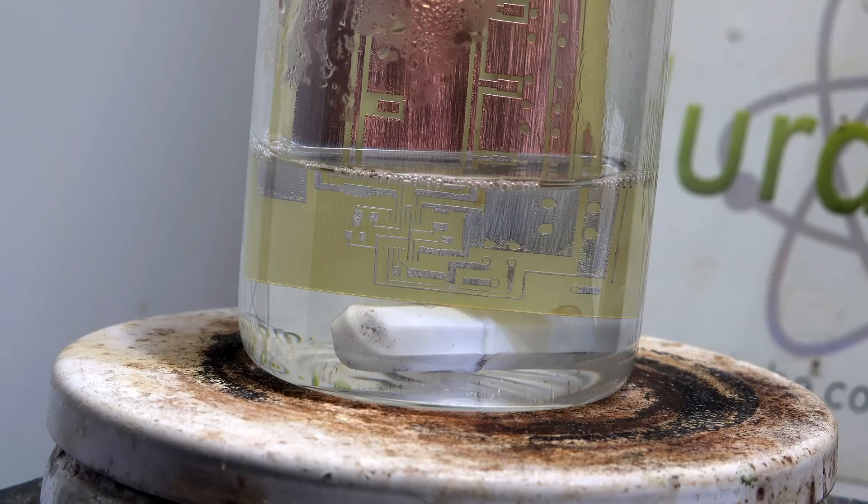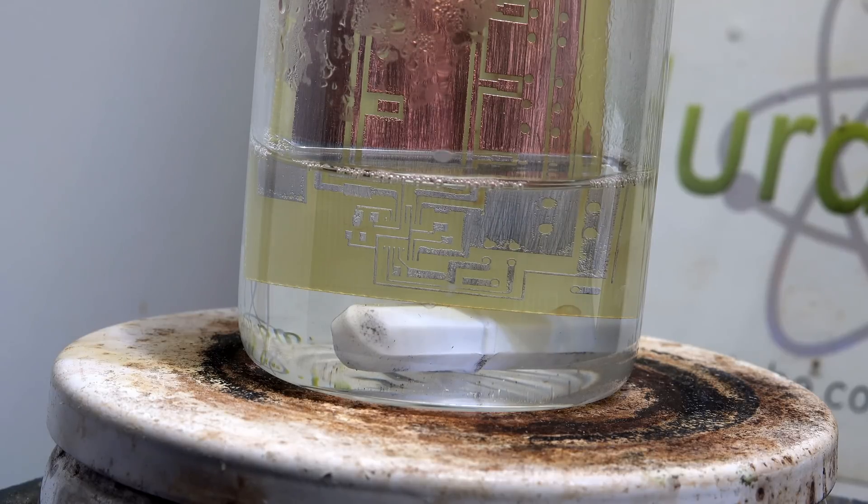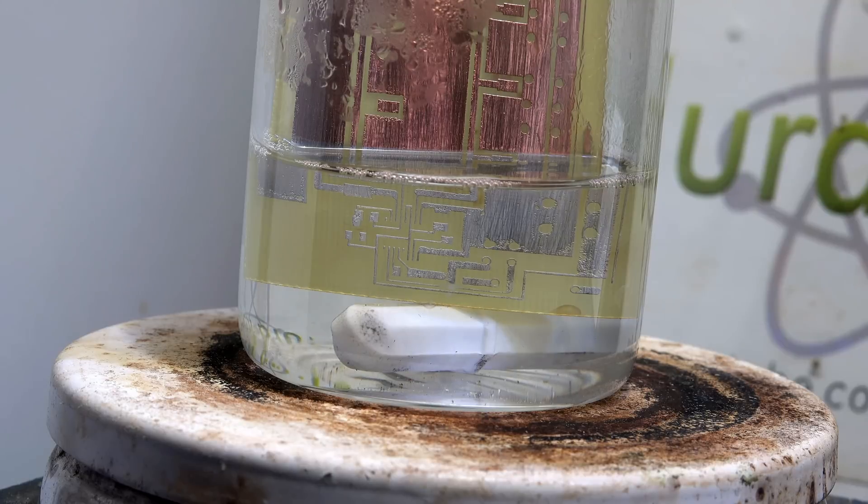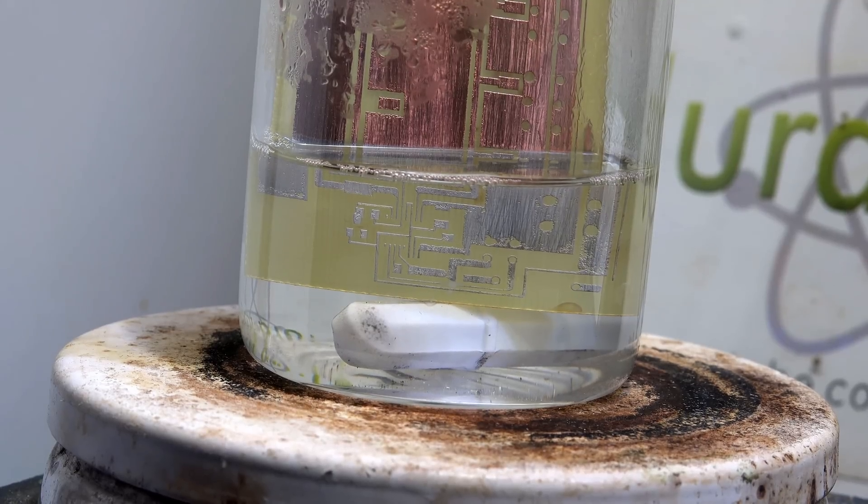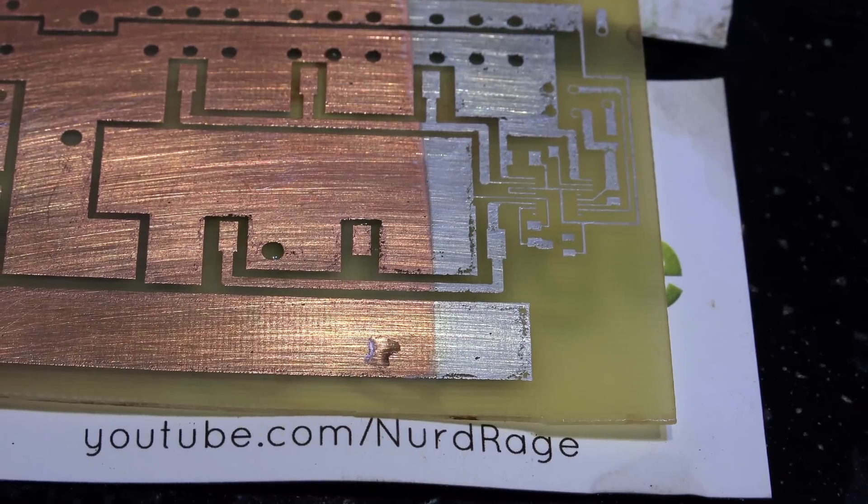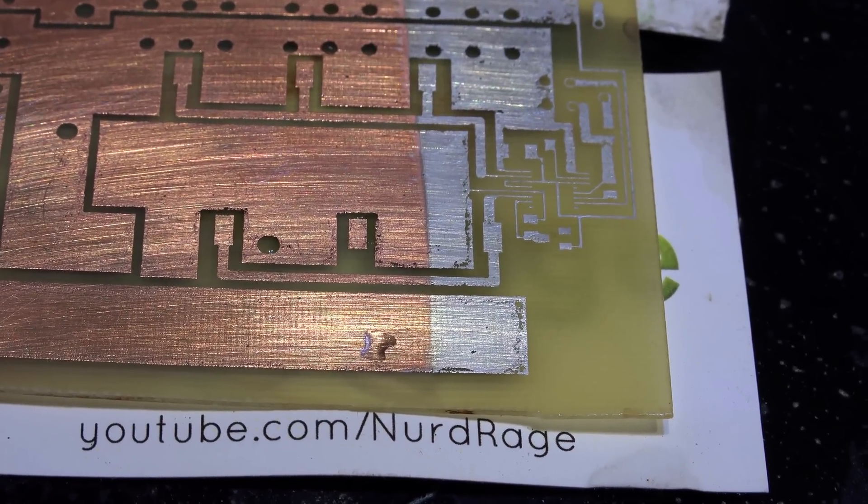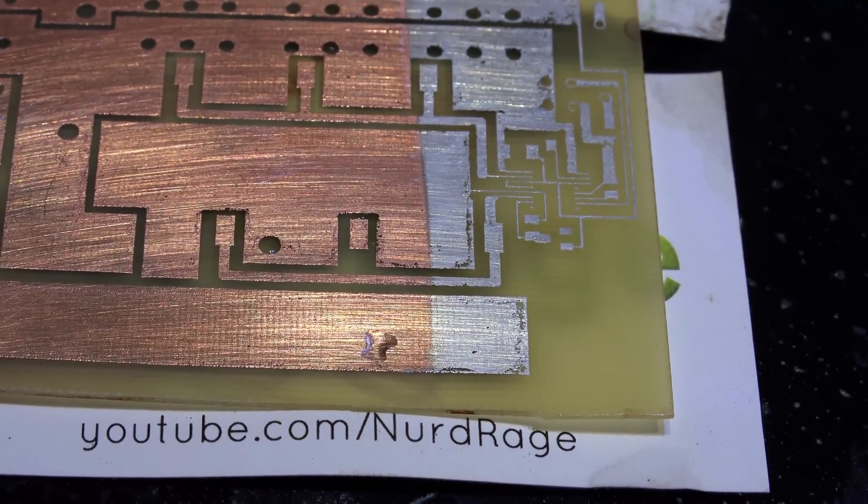Anyway you can leave the copper in the solution as long as you want. Once it's coated with tin the reaction stops and proceeds no further. I left it in for a few minutes. And there you go, tin plated onto copper without electricity. As you can see the difference is striking.